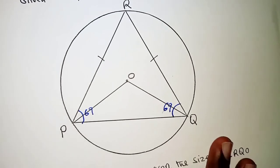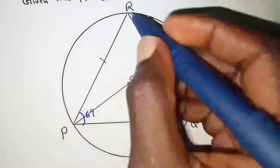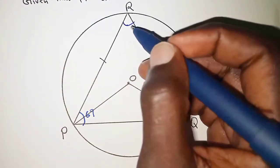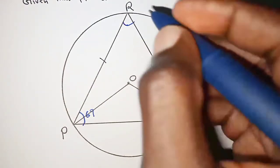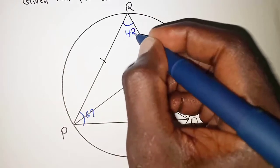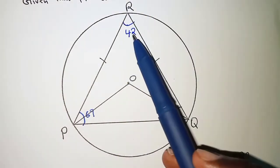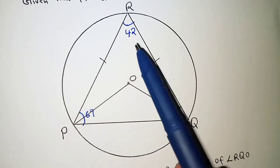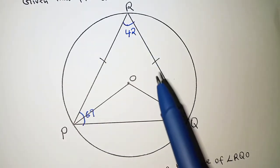From there, we can therefore say that the angle at this particular point, point R, is 42 degrees, so that the angle sum of the triangle is 180. So 69 plus 69 plus 42 should be 180.